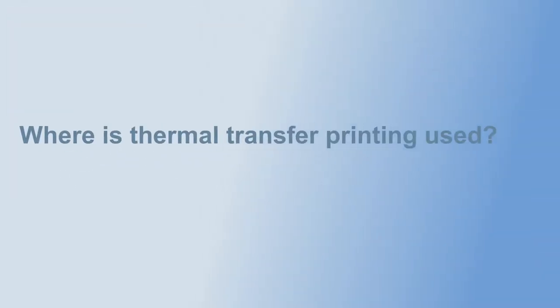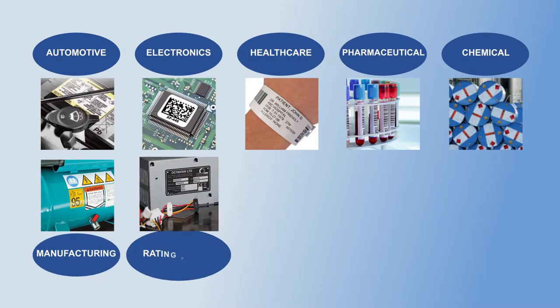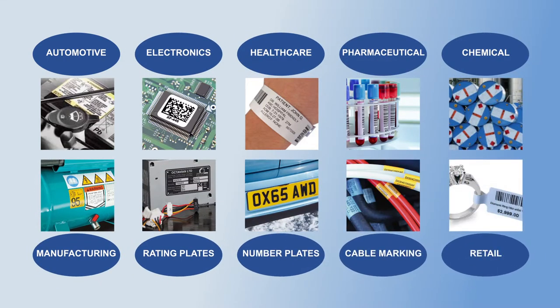Where is thermal transfer printing used? Thermal transfer printing is used by all types of companies to print variable information onto labels to provide best before dates, lot numbers, batch and serial number traceability, and barcodes.